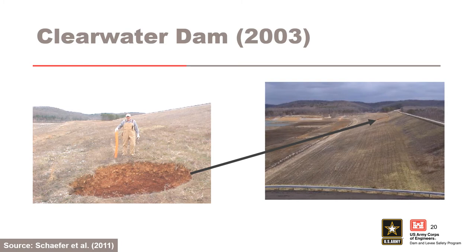These photos are from Clearwater Dam in 2003, where a 10-foot-wide and 10-foot-deep sinkhole formed on the upstream face at elevation 570. This followed the record pool of elevation 568. It took about two weeks for the reservoir to recede back to elevation 560, and about two and a half months to recede back to normal levels. The sinkhole was probably the result of long-term intermittent internal migration of the shell and natural alluvial material into the karst foundation, and more intense internal migration when the reservoir was high.